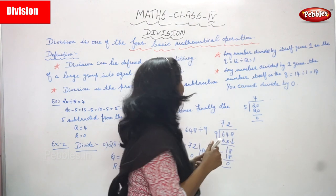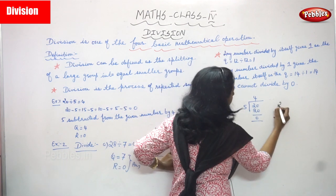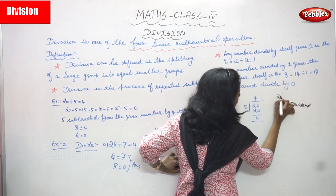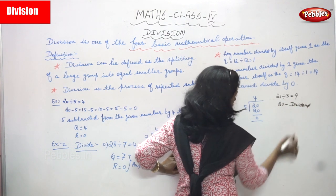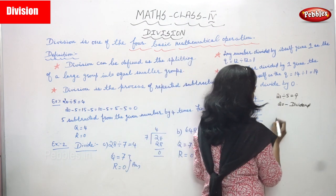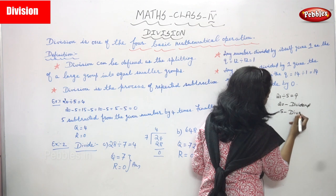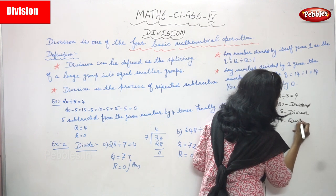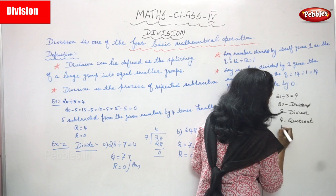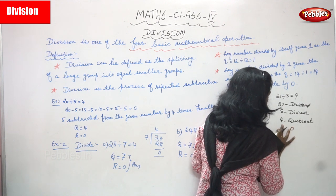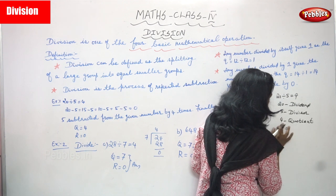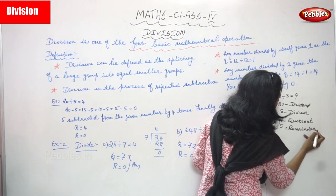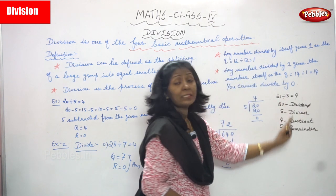So for example: 20 is divided by 5, you can get 4. Here, 20 is the dividend — D-I-V-I-D-E-N-D. 5 is the divisor — D-I-V-I-S-O-R. 4 is the quotient — Q-U-O-T-I-E-N-T. And the remainder is equal to 0 — R-E-M-A-I-N-D-E-R. These are the basic terms of division.